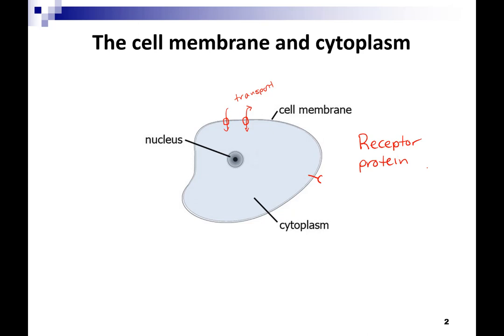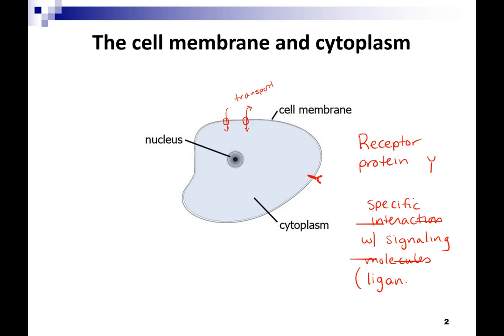Receptors are drawn crossing the membrane as transmembrane receptors, and they are very specific. They have a very specific interaction with signaling molecules. The signaling molecules are also called ligands. A lot of times these are proteins, but they can also be lipid-based, and they can be smaller molecules like ions as well.